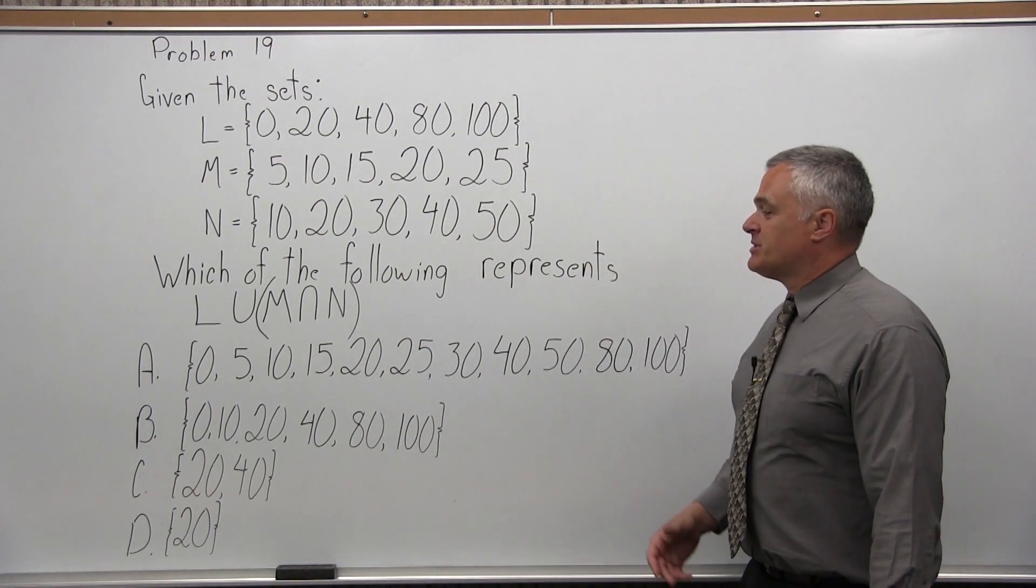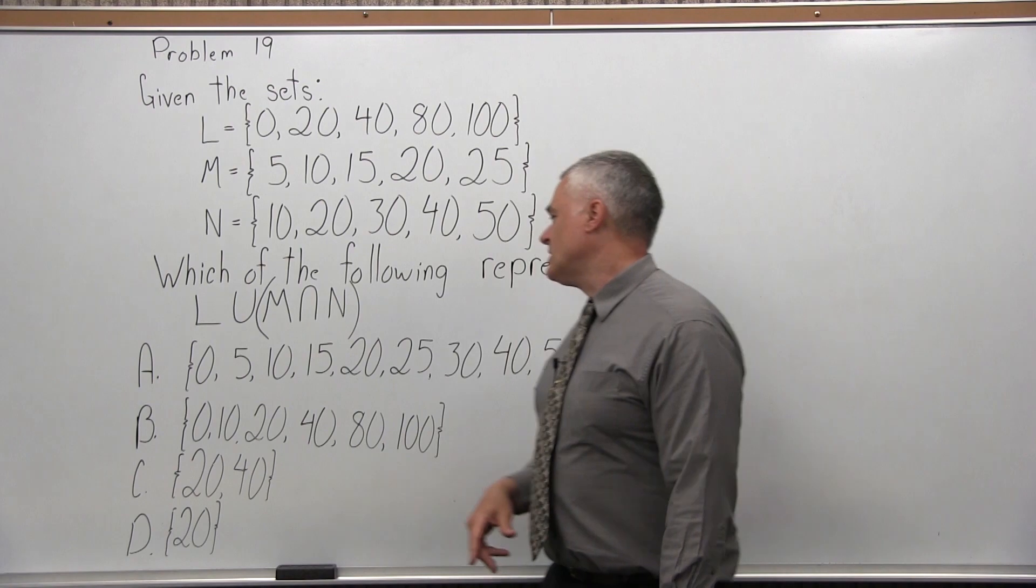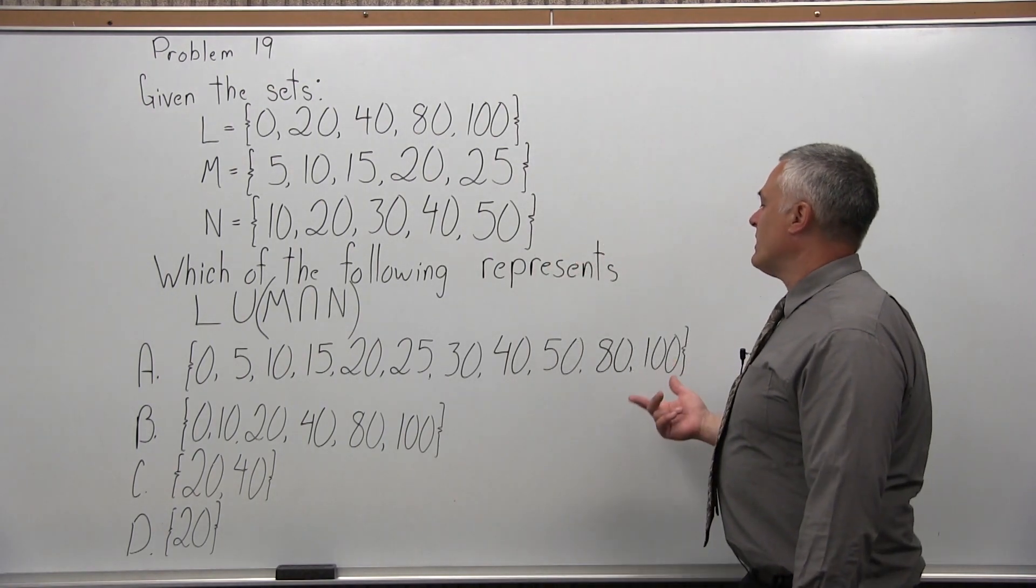And again, there's four options. Option A is the set 0, 5, 10, 15, 20, 25, 30, 40, 50, 80, 100.